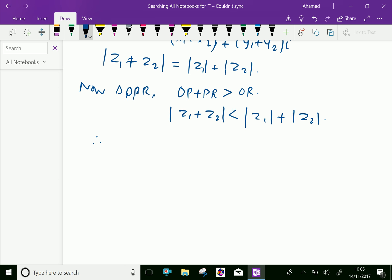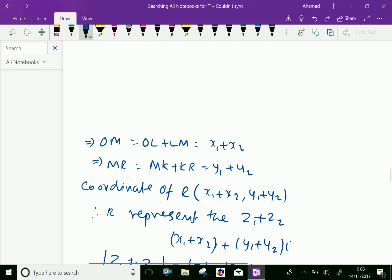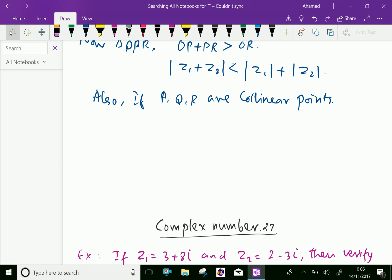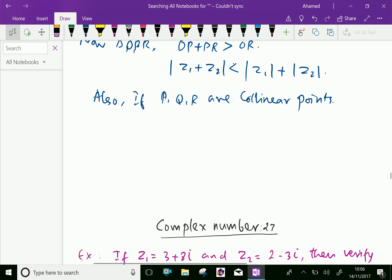Also, if P, Q, R are collinear points, meaning they form a straight line, then we can say OR equals OP plus PR. Therefore, |z₁ + z₂| equals |z₁| + |z₂|.